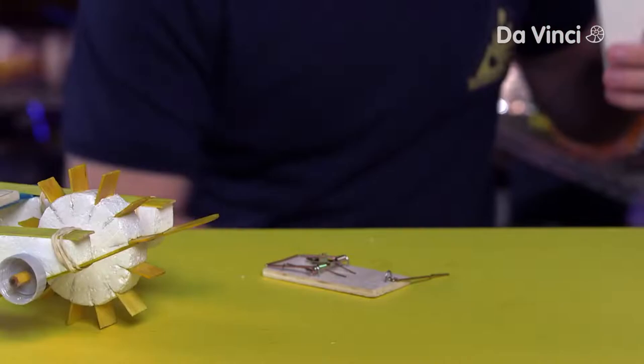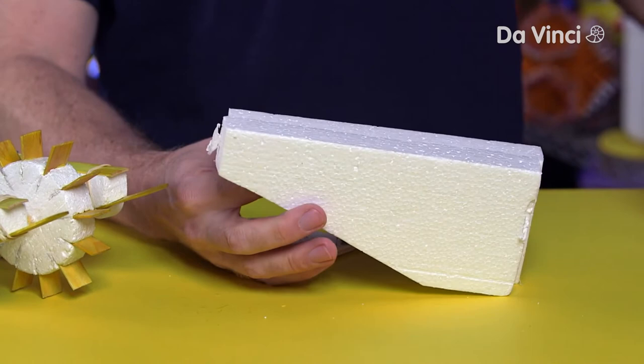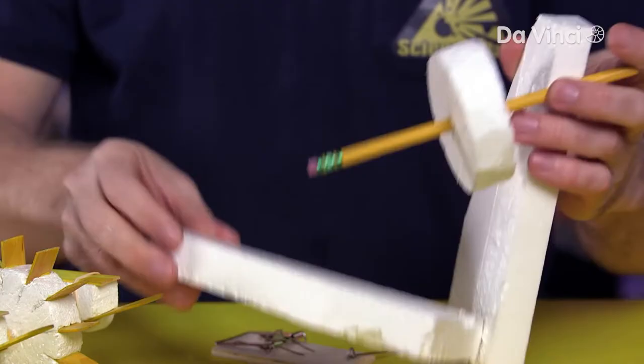Start with two pieces of styrofoam. I like to cut mine into this shape, but the only really important thing is that they're the same size. Your paddle wheel is made from a circle of styrofoam with a pencil through the middle, and it will go across like this.